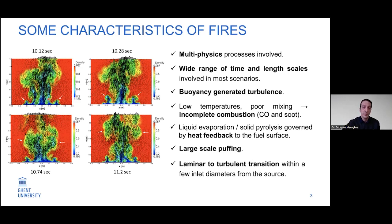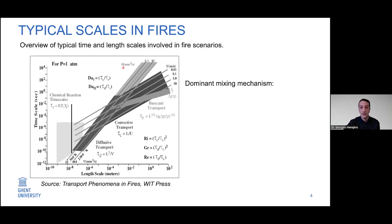We also have a laminar-to-turbulent transition occurring within a few diameters from the source. Typically the flow conditions are laminar, quasi-laminar, or weakly turbulent near the source, and then further downstream it evolves into a more turbulent flow.